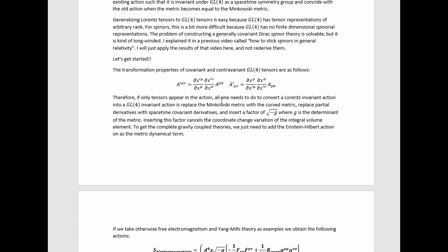Therefore, if only tensors appear in the action, all one needs to do to convert a Lorentz invariant action into a GL4 invariant action is to replace the Minkowski metric with the curved metric, replace partial derivatives with spacetime covariant derivatives,